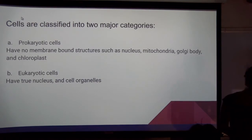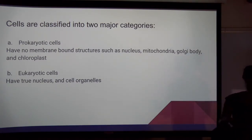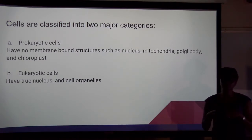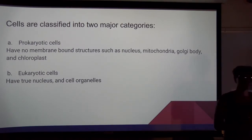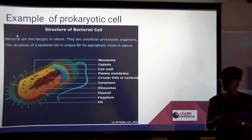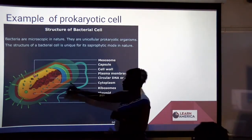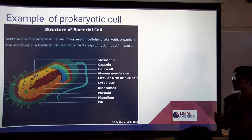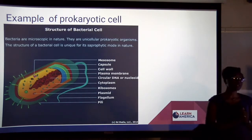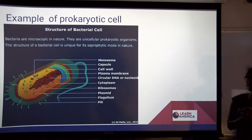There are two categories of cells: prokaryotic and eukaryotic. Prokaryotic cells have no nuclear membrane and no membrane-bound structures — bacteria are an example. Eukaryotes have a true nucleus and organelles. In a bacterial cell, you don't see mitochondria or chloroplasts. The genetic information is in the nucleoid but it's not wrapped in a membrane — the DNA floats inside the bacterial cell.